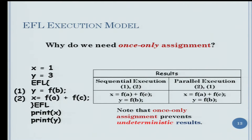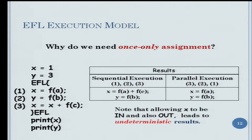If we don't allow in-and-out variables, and only allow in or out, the same code will be written so that x is only an out variable and y is also an out variable. Then sequential execution and any parallel execution will give exactly the same values. The once-only assignment prevents the non-deterministic results that we had in the non-EFL code.